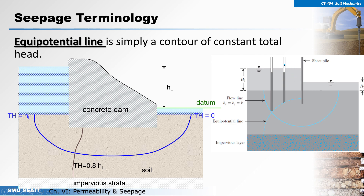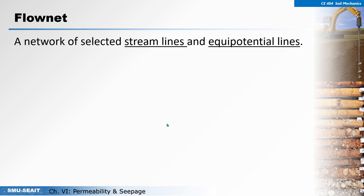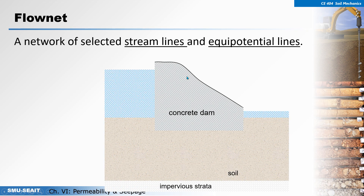Consider the sheet pile: total head is the same means that if you try to insert a piezometer, the water level will be at the same level, because at the end of the piezometer the head will be the same. So this is an equipotential line, and the heads will be the same at any point on this equipotential line.